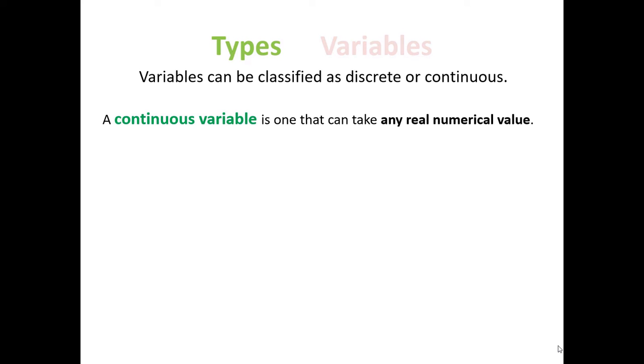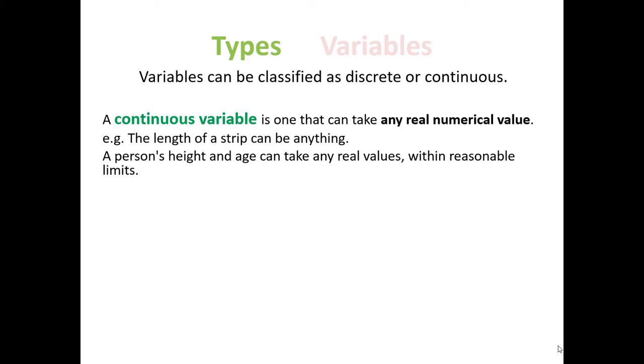A continuous variable is one that can take any real numerical value. For example, the length of a strip can be anything, a person's height and age can take any real value within reasonable limits.